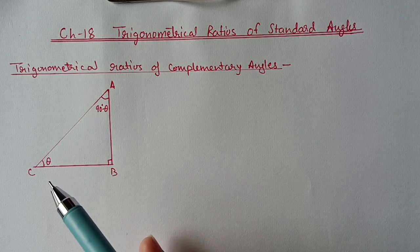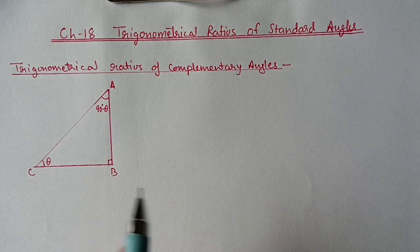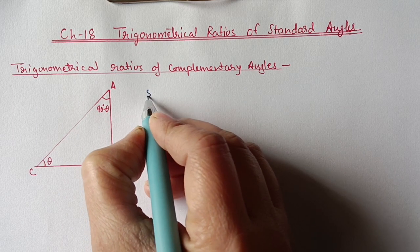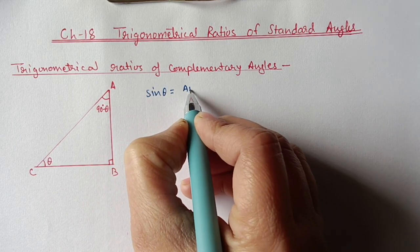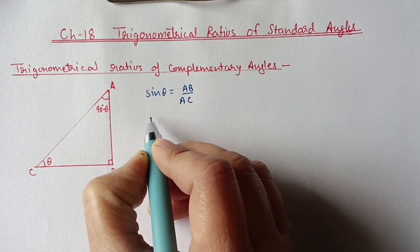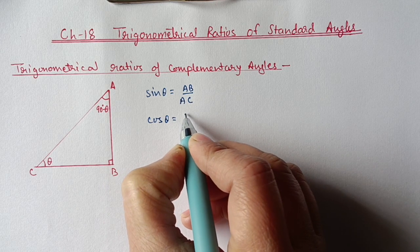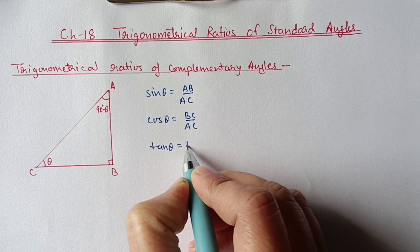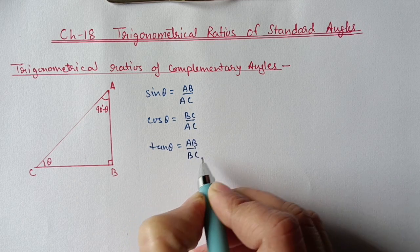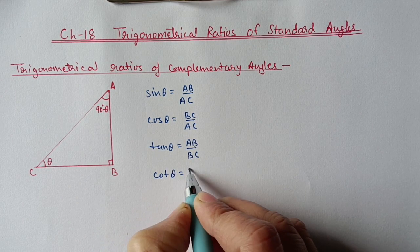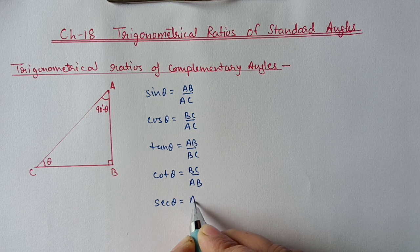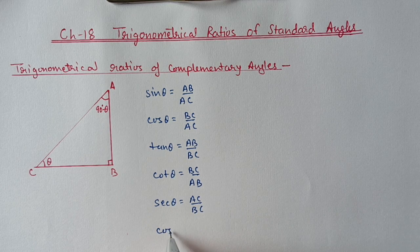First we will find the trigonometrical ratios for θ, and then for 90 minus θ, then we will check the relation between them. So: sin θ = perpendicular/hypotenuse = AB/AC; cos θ = base/hypotenuse = BC/AC; tan θ = perpendicular/base; cot θ = base/perpendicular; sec θ = hypotenuse/base; cosec θ = hypotenuse/perpendicular.